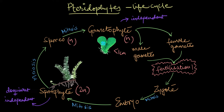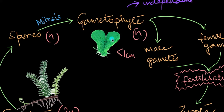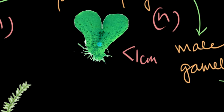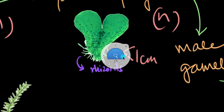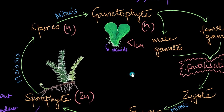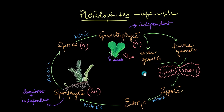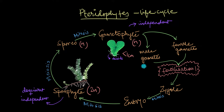The gametophyte can even gather raw materials like water and minerals from the soil using thread-like structures. Do you see these thread-like structures? These are called rhizoids. Using these rhizoids, the gametophyte can easily gather raw ingredients like water and minerals from the soil. The gametophyte also bears the sex organs, which produce the male and female gametes.